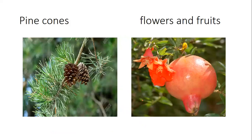This is an example of plants that have flowers, and this is the fruit. Other plants have cones, like these pine cones. They are used for reproduction.